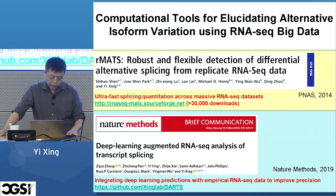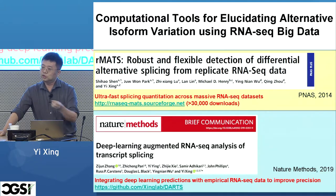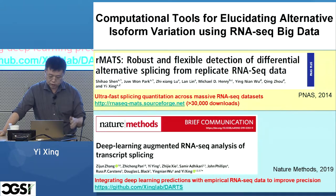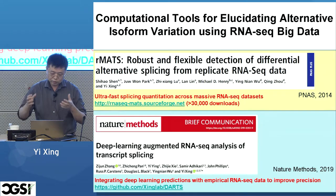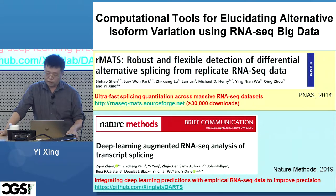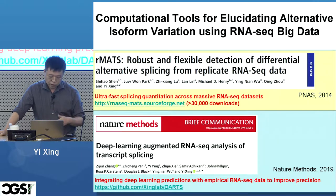Two representative tools we developed: one is rMATS, which quantifies RNA splicing levels at individual exons and splice sites across many samples and detects which exon or splice site has undergone differential alternative splicing — essentially differential isoform proportions across different biological states. We recently released a new version called rMATS Turbo, which is over 1,000 times faster than the initial version, allowing ultra-fast splicing quantitation across massive RNA-seq datasets. Another tool, which I'll talk about today, is DARTS, which uses deep learning predictions coupled with empirical RNA-seq data to improve the precision of splicing analysis.